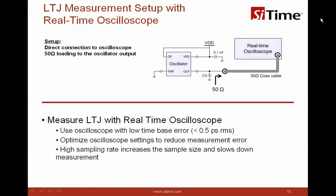The long-term jitter measurement setup with a real-time oscilloscope uses the oscillator output directly connected to the oscilloscope with 50-ohm coax cables. When measuring long-term jitter, the oscilloscope should have a low time-base error and its settings should be optimized to reduce measurement error, following the guidelines discussed in the previous webinar on period jitter measurement. However, high sampling rates of a real-time oscilloscope in long-term jitter measurement increase the sample size and slow down the measurement significantly.